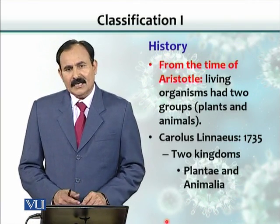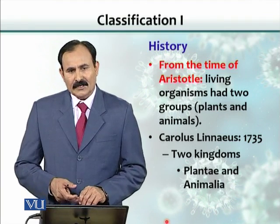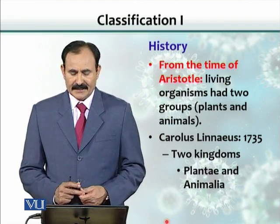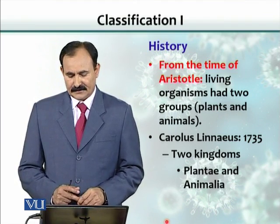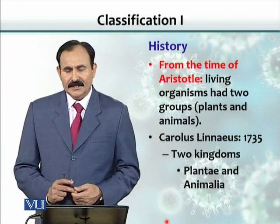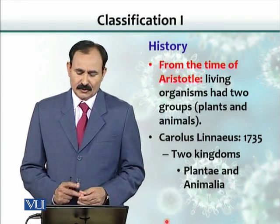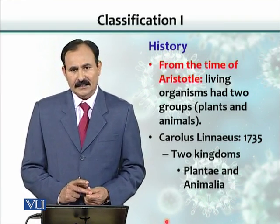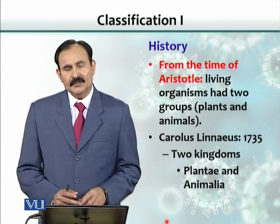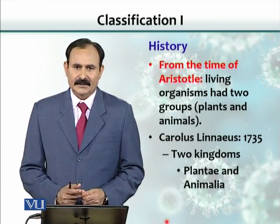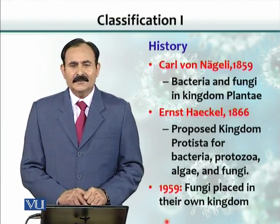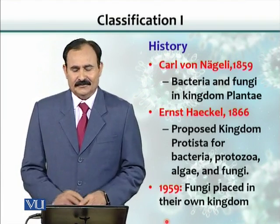From the time of Aristotle, living organisms were grouped into two categories: plants and animals. In 1735, Carlos Linnaeus proposed two kingdoms, placing all organisms into either plants or animals. Microorganisms were kind of left out.